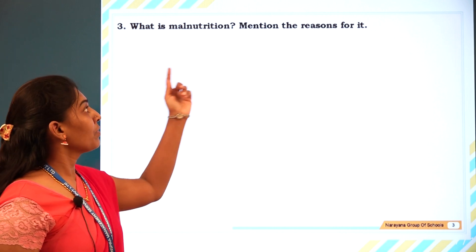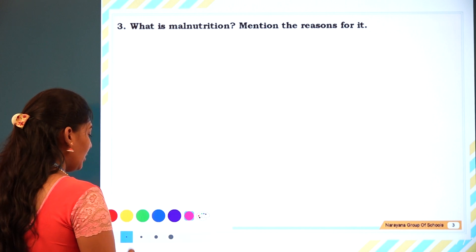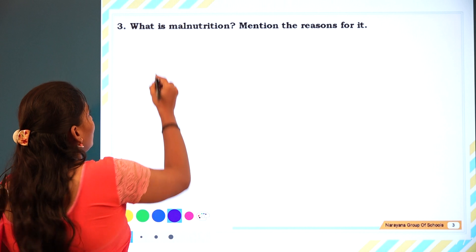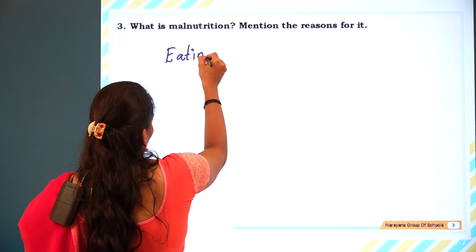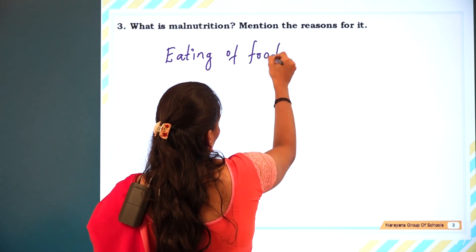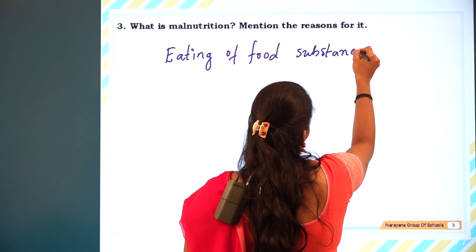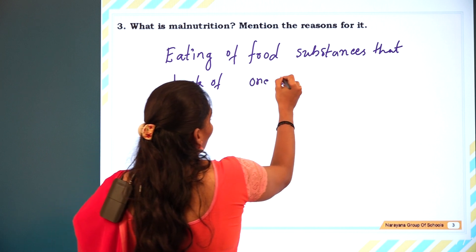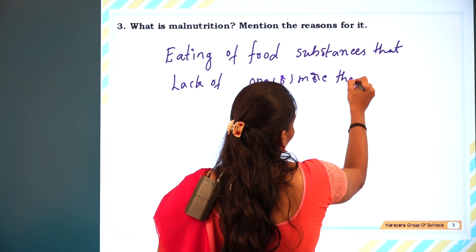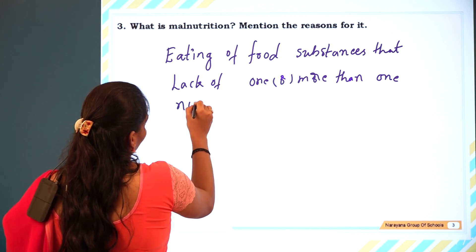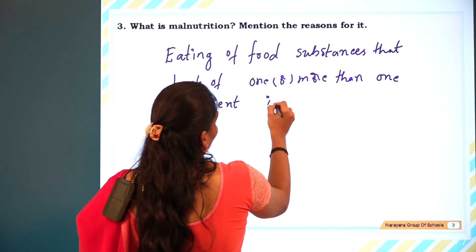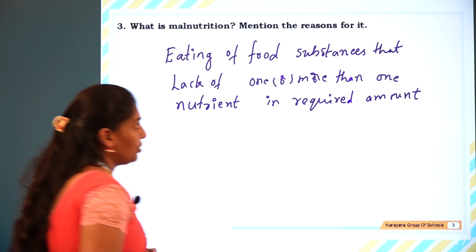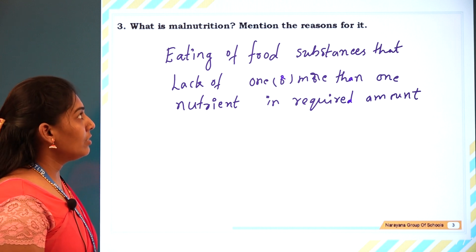What is malnutrition? Mention the reasons for it. Malnutrition is nothing but eating food substances that lack one or more nutrients in the required amount. If any nutrients are missing, that condition is called malnutrition.